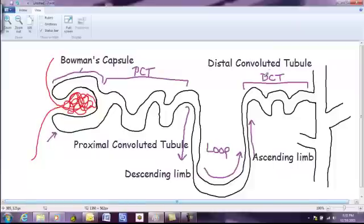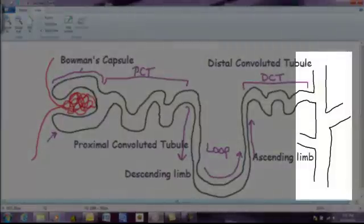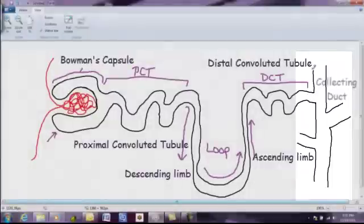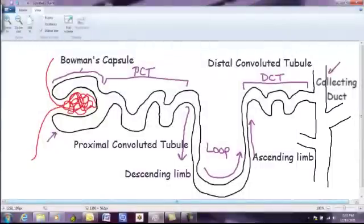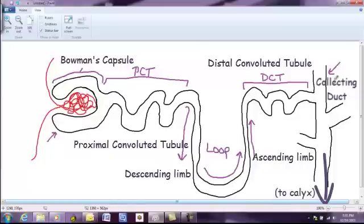Then, a bunch of these tubules connect into this structure here. There's fewer of these. This is the collecting duct. And the collecting duct dumps into a place called the calyx. So, that's the basic structure of the nephron.